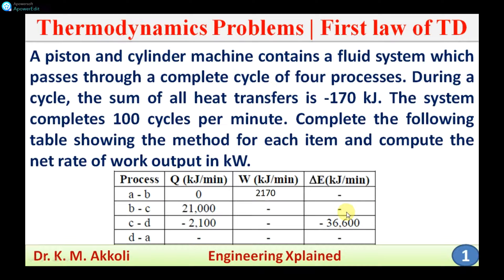For process B-C, the work transfer and change in internal energy both need to be found. For process C-D, the rate of heat transfer is minus 2100, work transfer is unknown, and the change in internal energy is given as minus 36,600. For process D-A, the heat transfer, work transfer, and change in internal energy all need to be determined. It is given that the sum of all heat transfers for the complete cycle equals minus 170 kilojoules per minute.